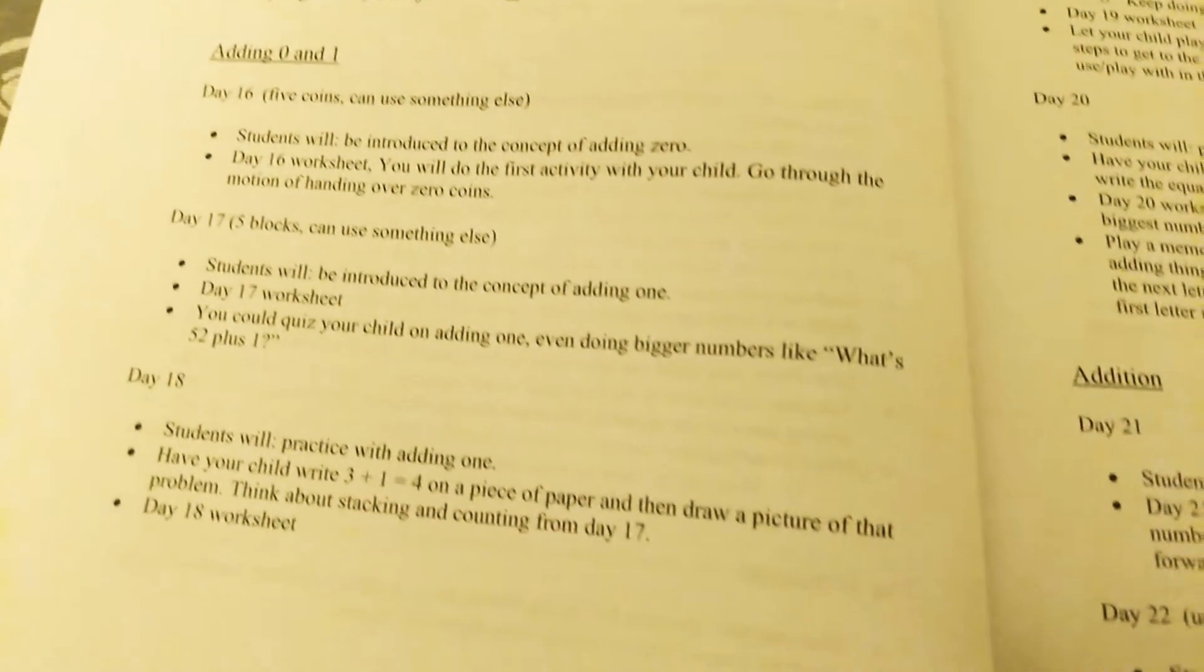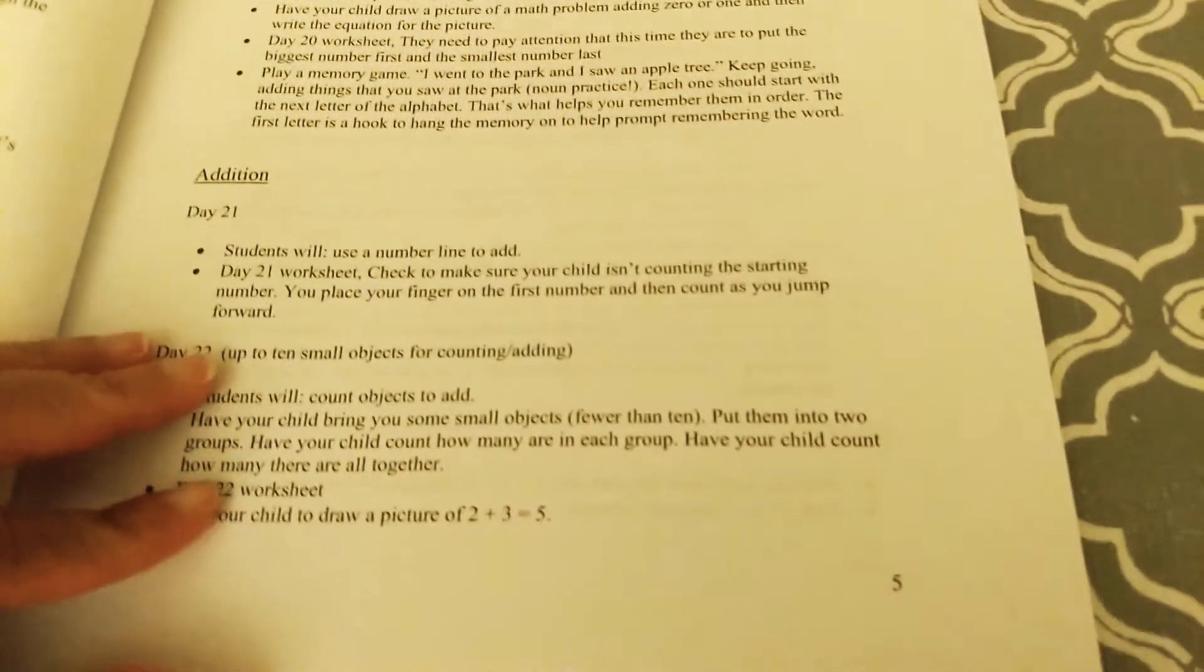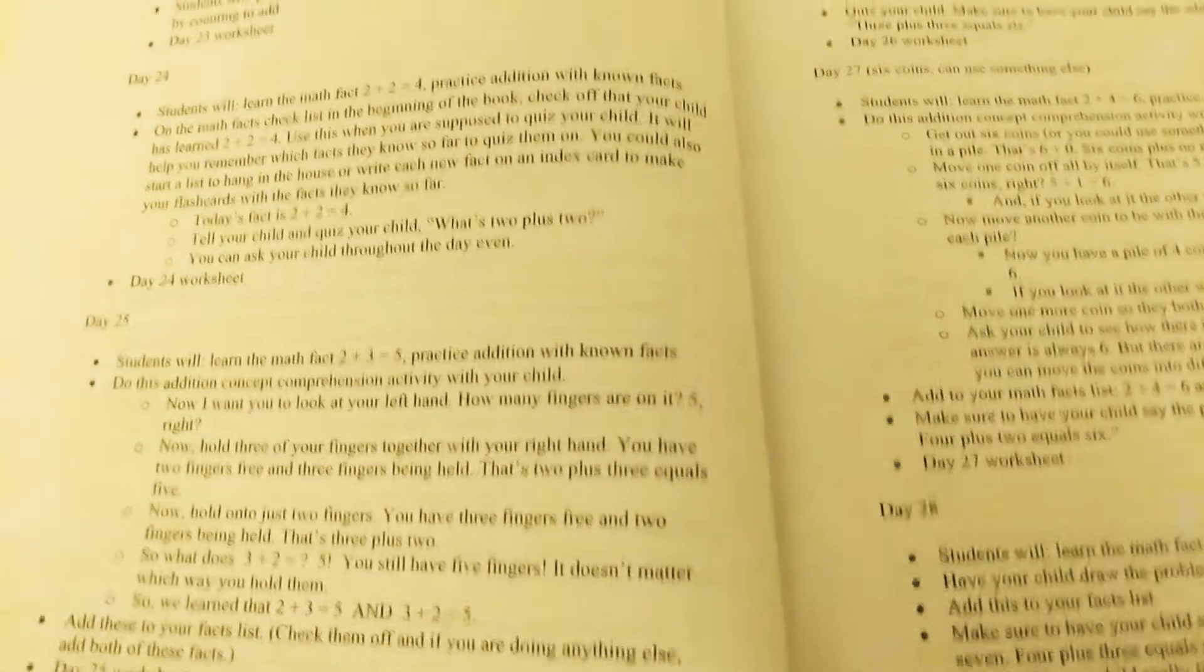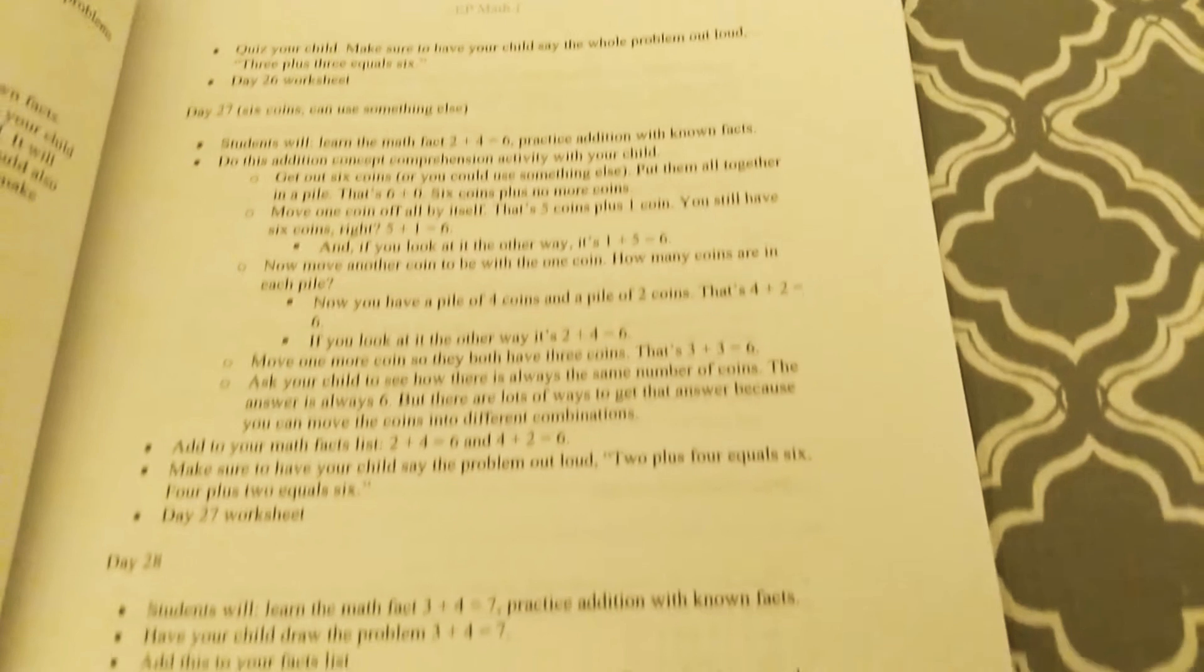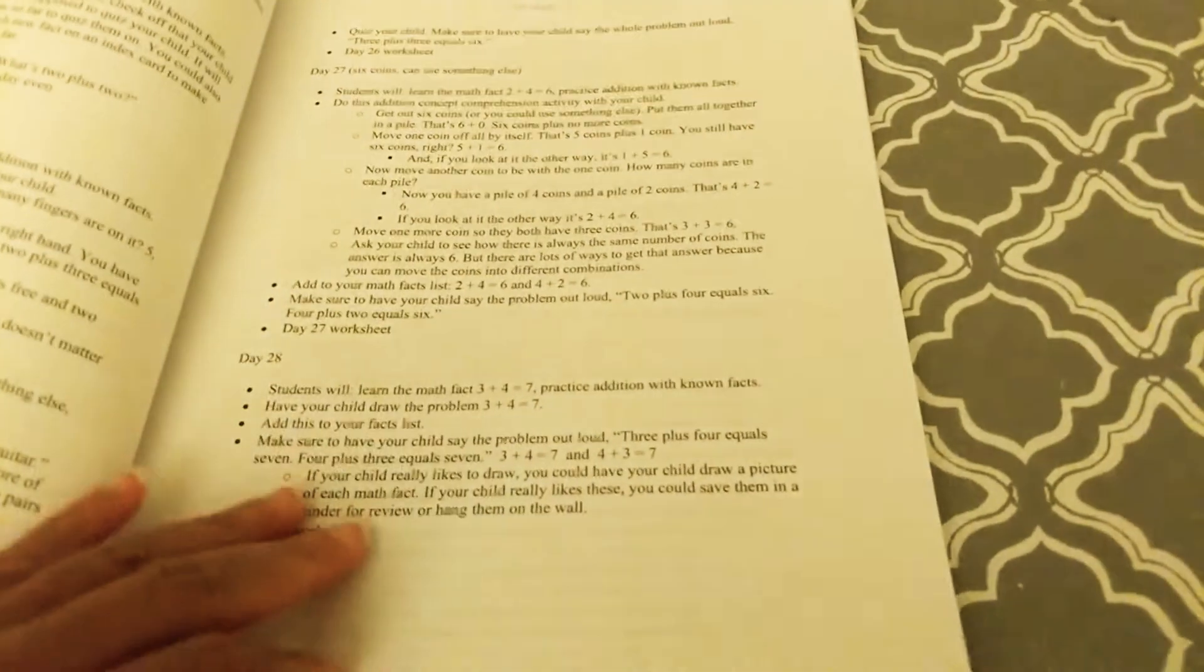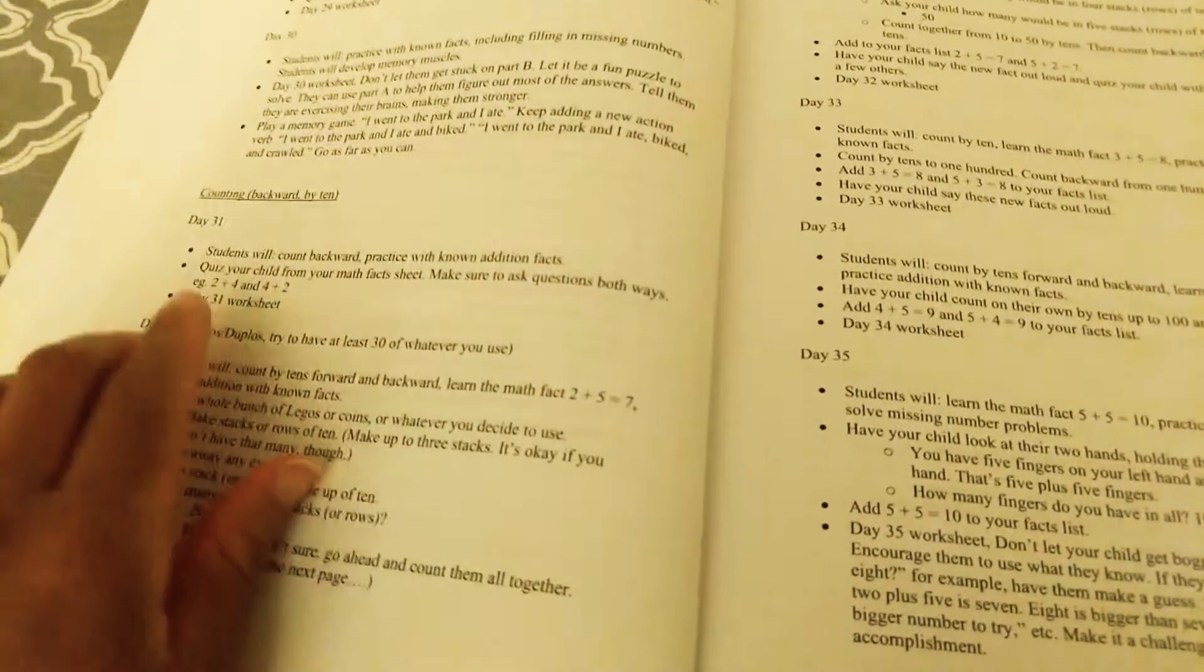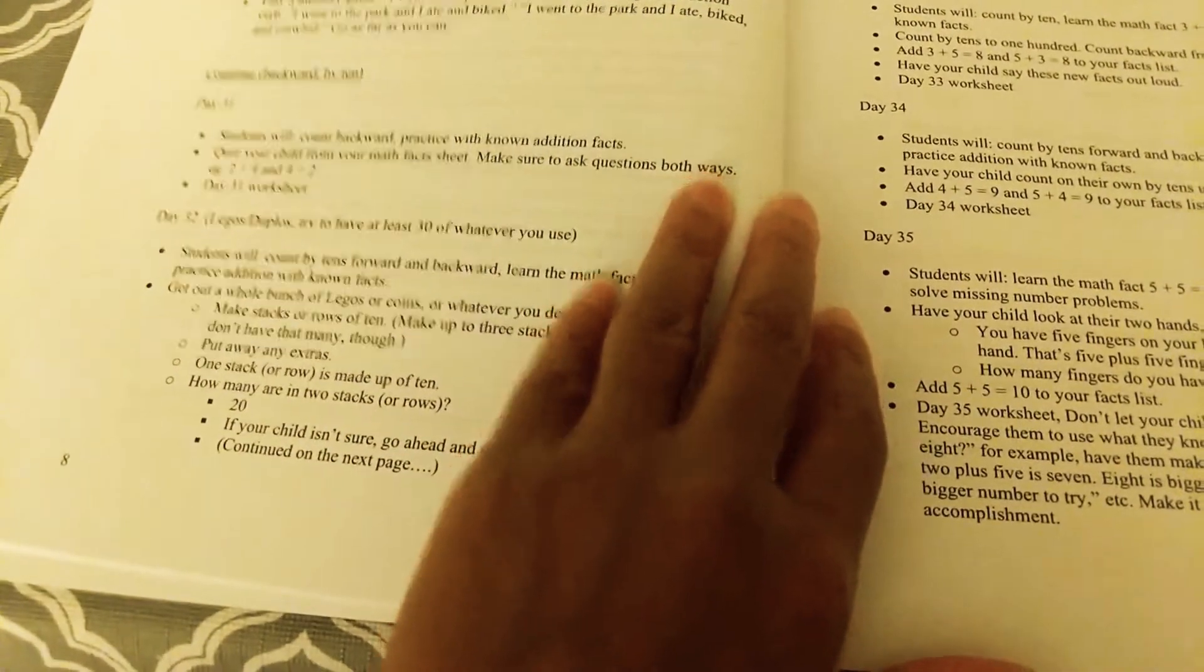And then we have adding zero and one. Addition, and then we have addition done at day twenty-one. Then we have addition. Okay, we have counting backwards by ten, starting at day thirty-one.